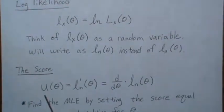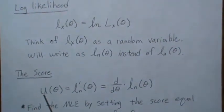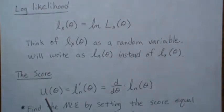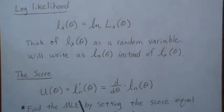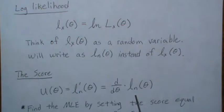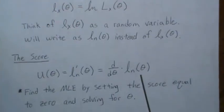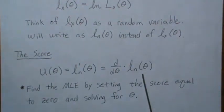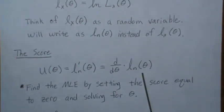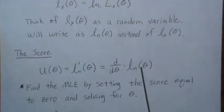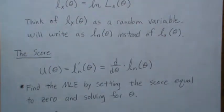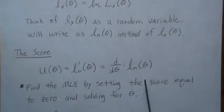The score is often written as capital U of theta. It's really the first derivative of our log likelihood. And if we were to find the MLE — the maximum likelihood estimate — we would set this equal to zero and solve for theta. That would be our maximum likelihood estimate for theta.